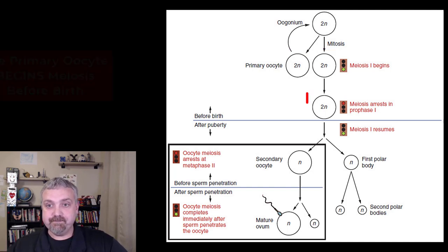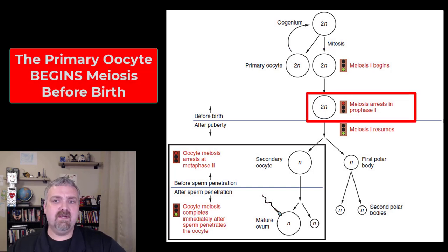Now we have the primary oocyte, and now this is going to undergo meiosis I and it is going to be stopped here at prophase I. But this is really cool - all this has happened before birth. The cells that are going to become the functional oocytes later in life happened while a girl is in her mother's womb. It's pretty cool that the next generation is already getting started while a female is in her mother's womb.